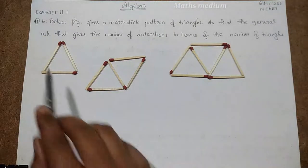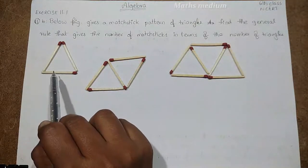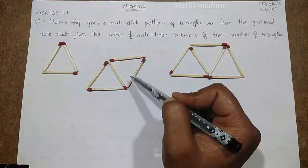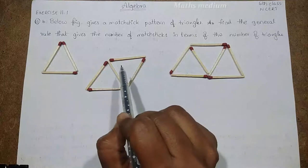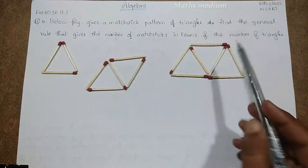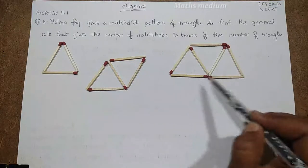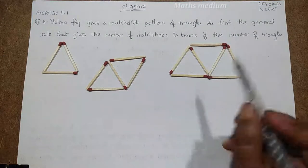So this is the pattern of triangles. See here we made a triangle with 3 matchsticks. And here 1, 2, 3, 4, 5, by using 5 matchsticks we are forming 2 triangles. And here also 1, 2, 3, 4, 5, 6, 7, by using 7 matchsticks here we are forming 1, 2, 3 triangles.